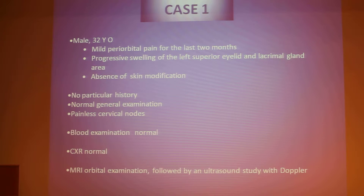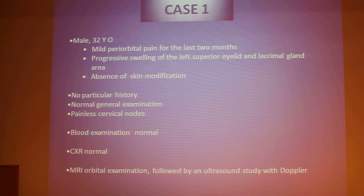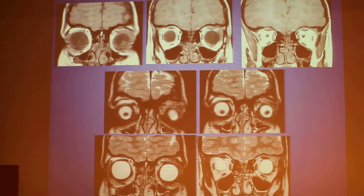His general examination was normal except for painless cervical nodes. A chest X-ray performed on a regular basis a week ago was normal. Blood examination was normal as well — no abnormal cells, no signs of inflammation or infection were found. Eventually, the patient underwent MRI orbital examination followed by an ultrasound study with Doppler.